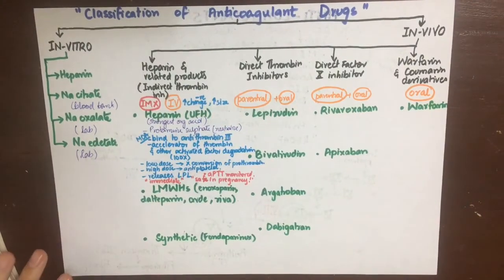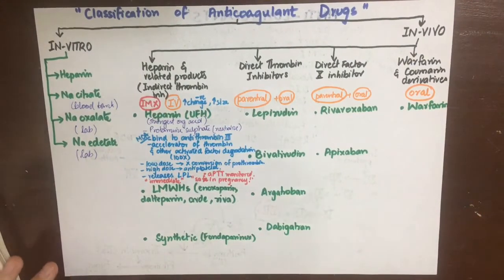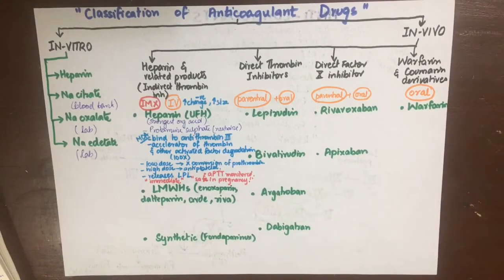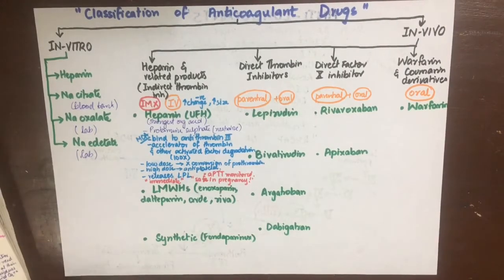Heparin should not be given in patients with hemophilia, intracranial hemorrhage, threatened abortion, cirrhosis, renal failure, hypertension, active TB, and bacterial endocarditis.